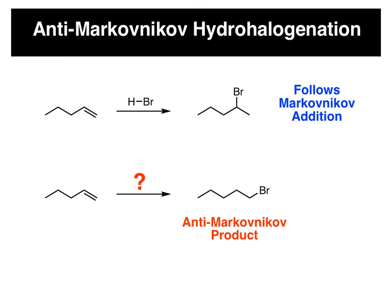Here we're going to take a look at a reaction that is complementary to the hydrohalogenation that we learned earlier in the semester. So if you take a double bond and react it with HBr, this follows Markovnikov addition where the bromine ends up on the carbon that's more substituted, and the hydrogen ends up on the carbon that's less substituted, or the side where there's more hydrogen.